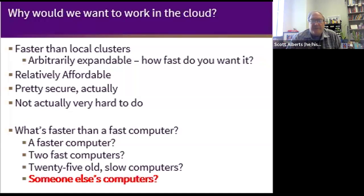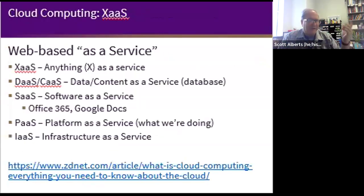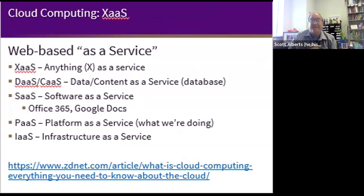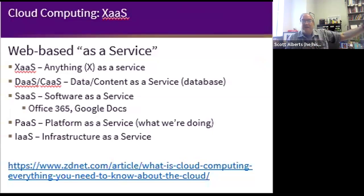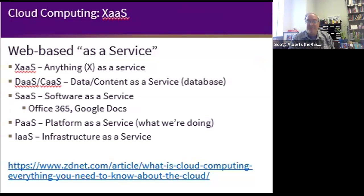This idea that we can use the cloud to give us all of these different services leads to a term of art: XaaS, meaning something as a service. DaaS is the idea that you keep your data somewhere else. SaaS is software as a service — Google Docs, for instance: your files live in the cloud. You might have a copy locally if you have Google Drive, but Google Docs itself lives in the cloud, similar to how Office 365 works.